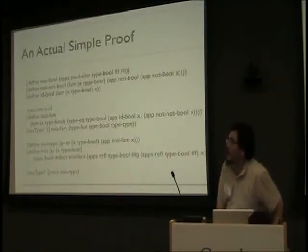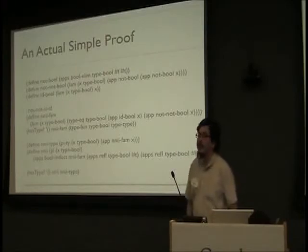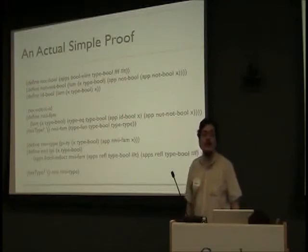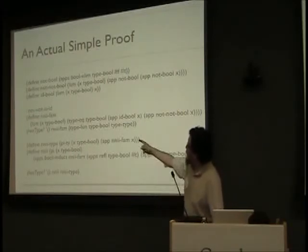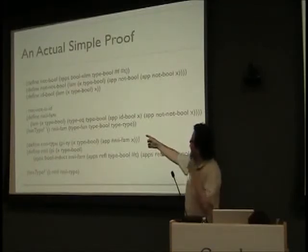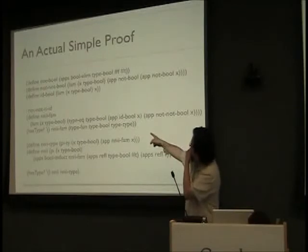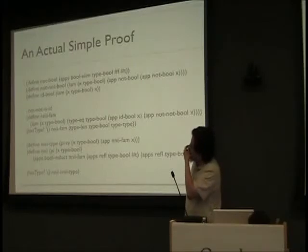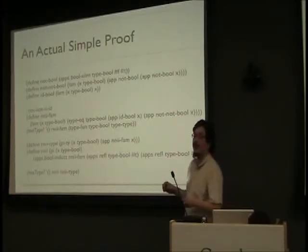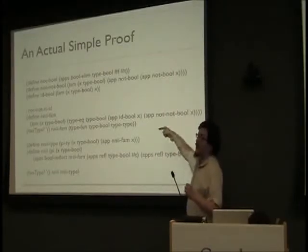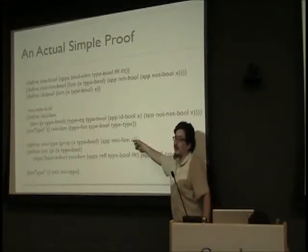I will give you back an equality between bool — between the application of id bool to x and the application of not-not bool to x. I don't give you back a value of that equality; I give you back a type of that equality. So this is a type family: I give it a value of type bool, and it produces a type, which is the proposition that applying these two different functions — identity and double negation — is the same. We can verify that this has the type: function from type bool to type type.